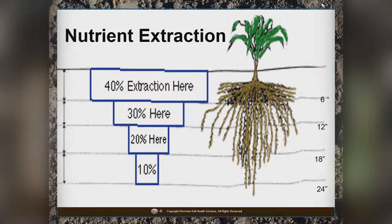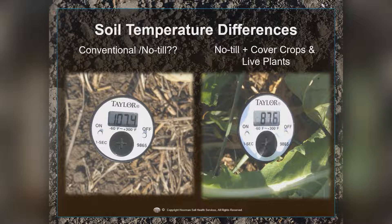It is important that we have good soil structure and not have compaction in our soils. Compaction and tillage also impact soil temperature — bare soils tend to be hotter and have less biological life. A picture taken on a conventional tilled soil showed a temperature over 107°F, while right next to it on a no-till cover crop, the soil temperature was around 87°F. You're going to have a lot more biological life and be able to conserve more moisture where you have lower temperatures, especially in the middle of summer.